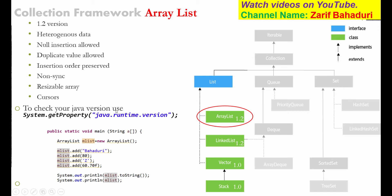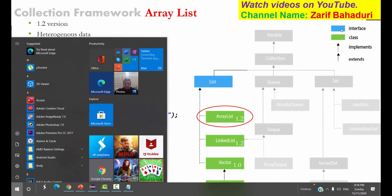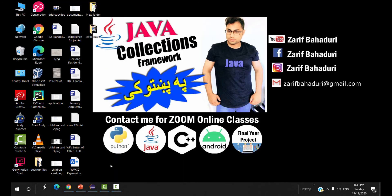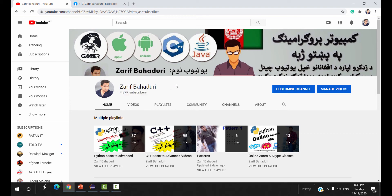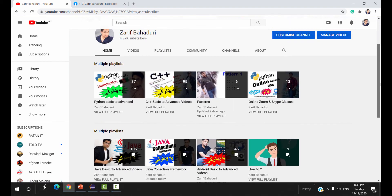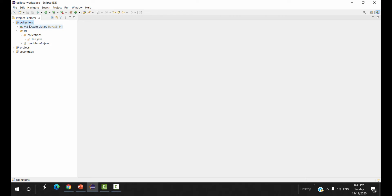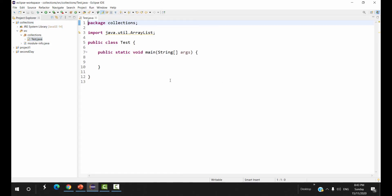To check your Java version, use System.getProperty("java.runtime.version"). If you want to check your Java version, you can use this. This is the first example. We will use a list and jump to Eclipse for the first practical example.